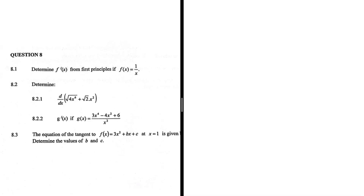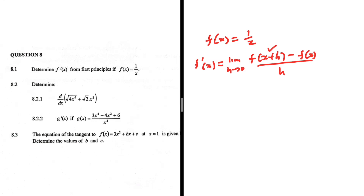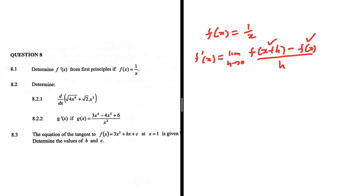We want to determine f prime of x from first principles if f of x equals 1 over x. So if we want to use first principles, we have f prime of x being equals to the limit as h tends to 0 of f of x plus h minus f of x, everything divided by h. Here we are just substituting x plus h in terms of x, and substituting f of x as it is, then dividing by h.